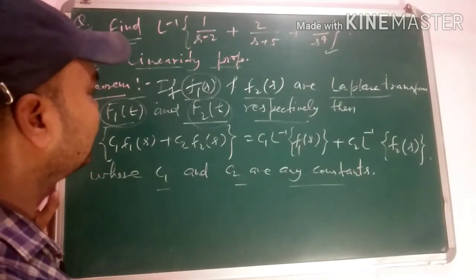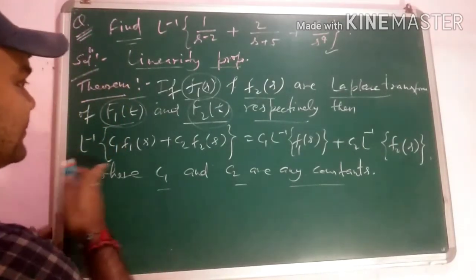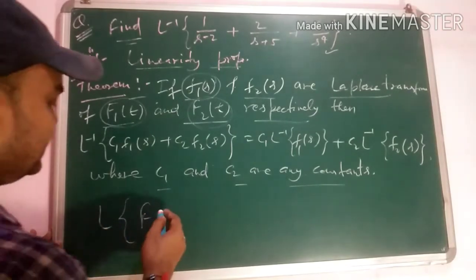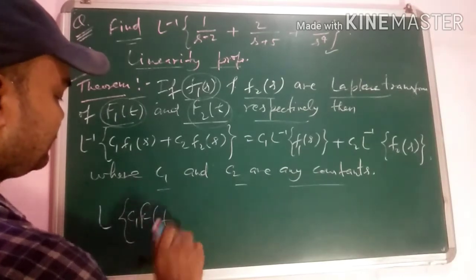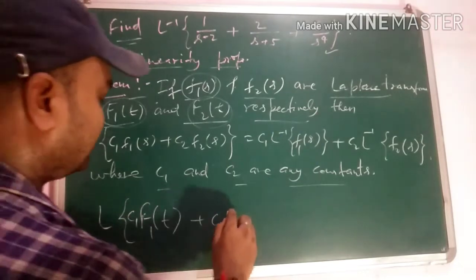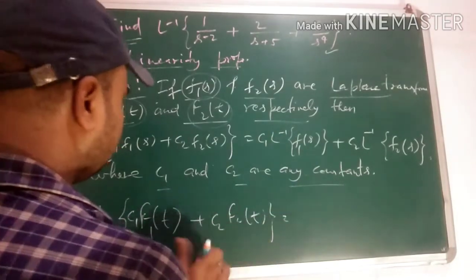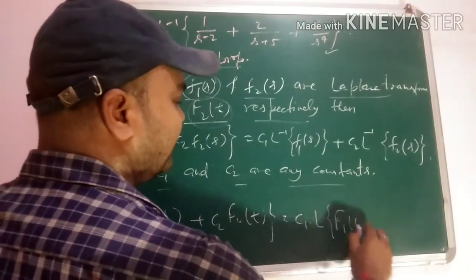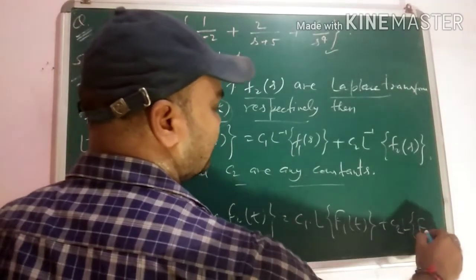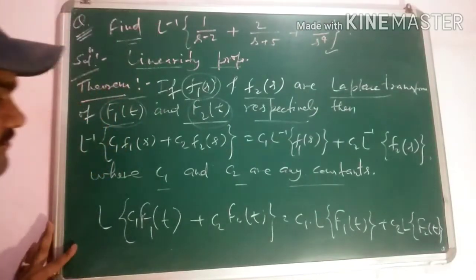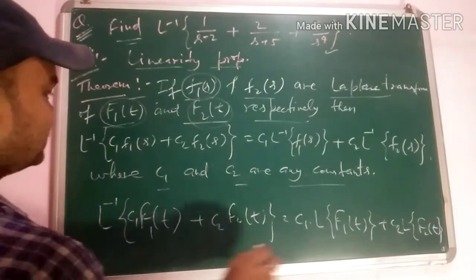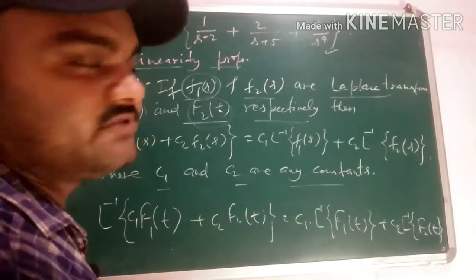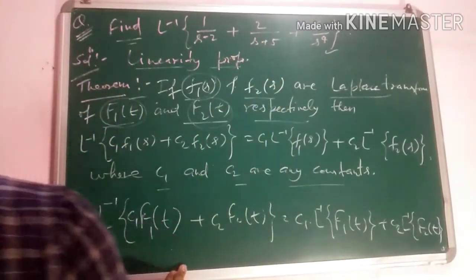The proof of this is not very difficult. If you know the forward Laplace proof, you can do this on the same basis. So we don't feel it's necessary to redo the proof here — it's done on exactly the same basis, with inverse appearing in place of the forward operator. So we won't waste time and will directly go to the question and solve it.